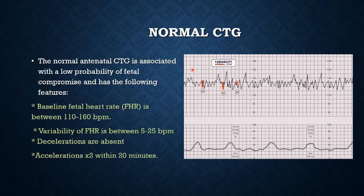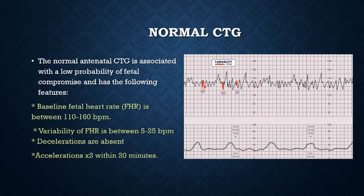Here we can see a normal CTG. To define a normal CTG, there should be some criteria. The baseline fetal heart rate should be between 110 to 160 beats per minute. Variability of fetal heart rate should be between 5 to 25 beats per minute. Deceleration should not be present and acceleration should be present. In this picture we can see that the fetal heart rate is more than 120 beats per minute, variability is normal at more than 5 beats per minute, there is no deceleration, and there are some accelerations.